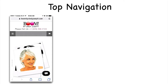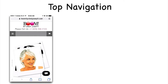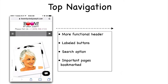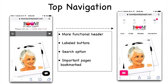I thought, I need to fix this. We looked to our top navigation because that's where people are engaging on mobile. We added a more functional header with labeled buttons, a search option, and really important page bookmarks. This is what it ended up looking like — it takes up a lot of screen real estate but there's a lot more action for them. This is not the final version, but just doing this was a big improvement.